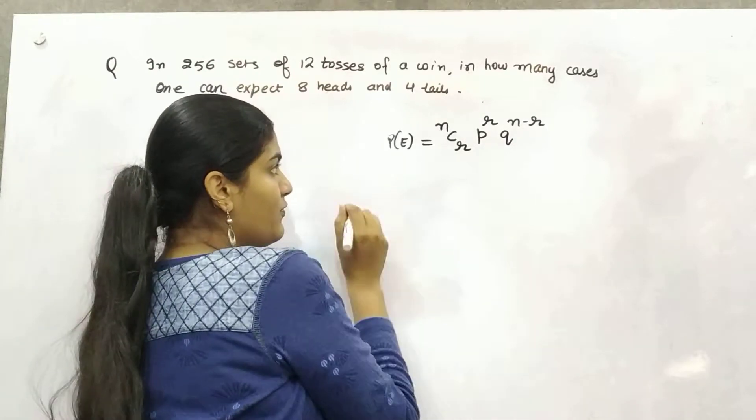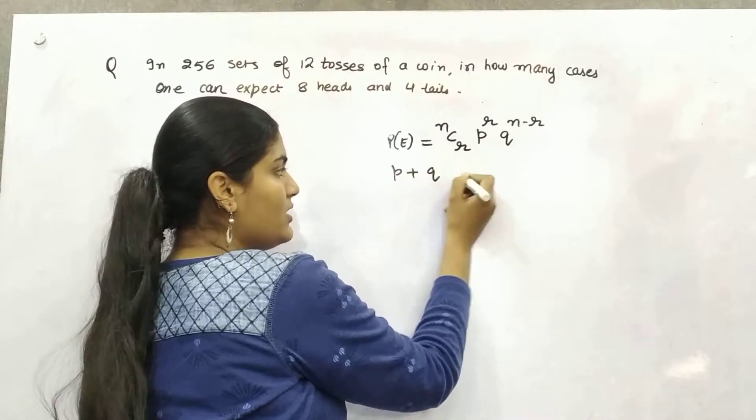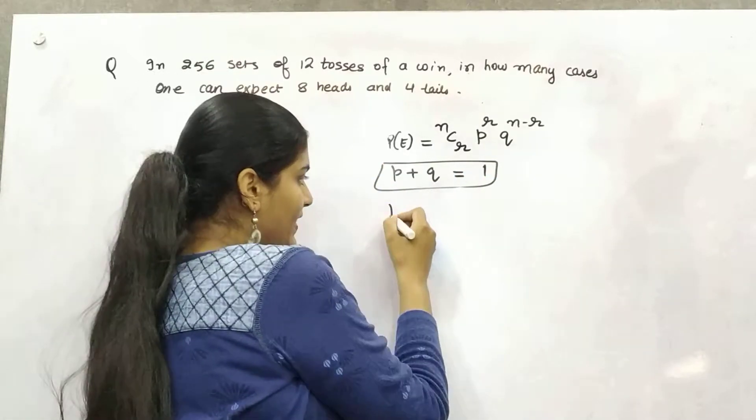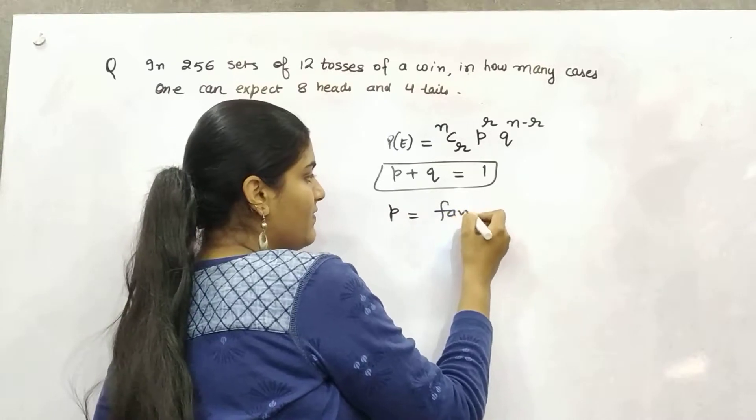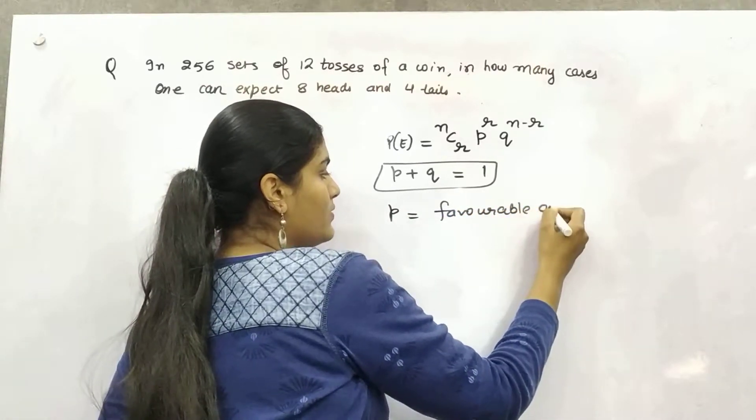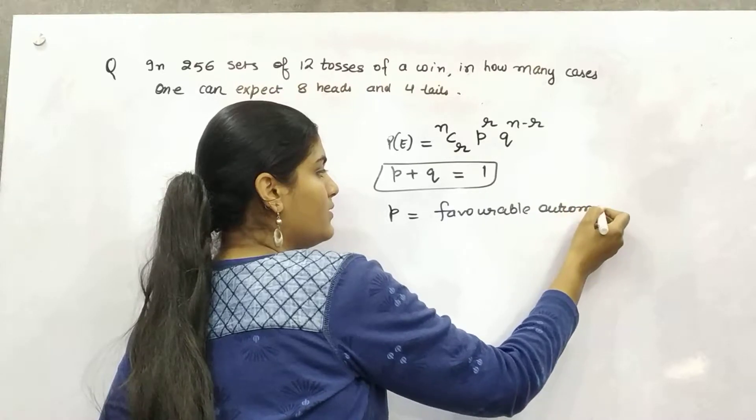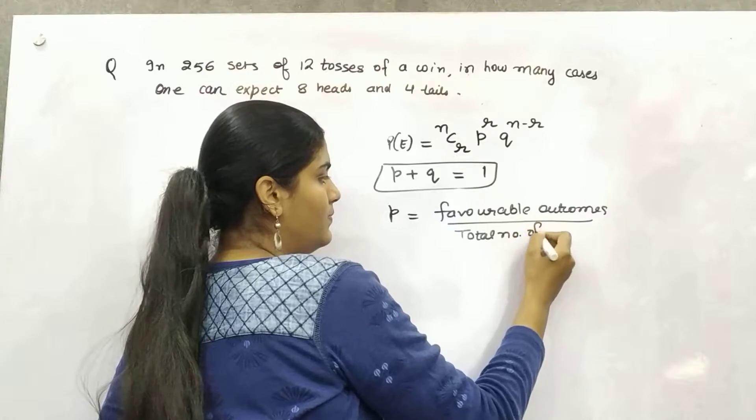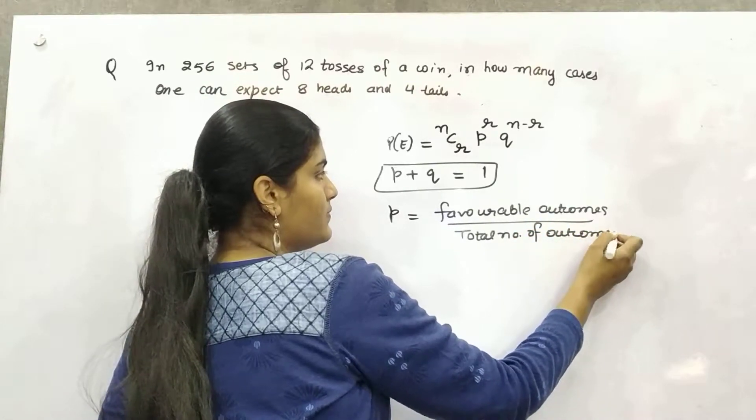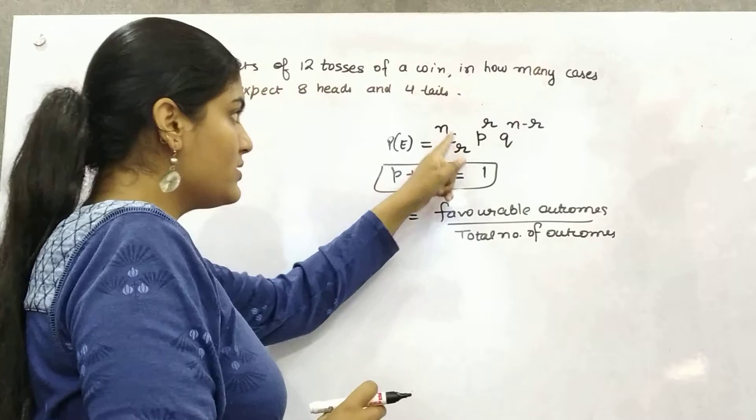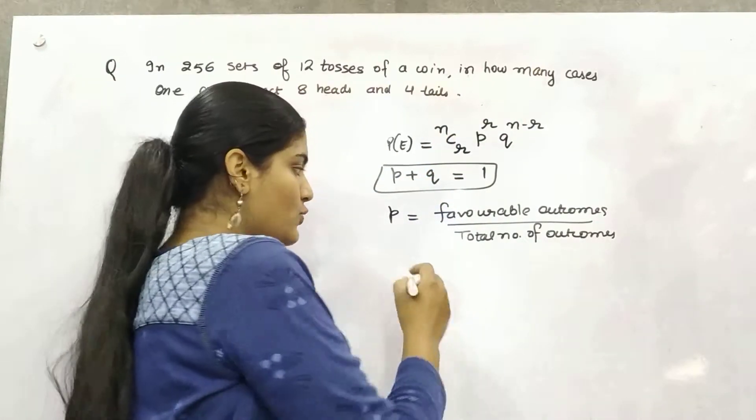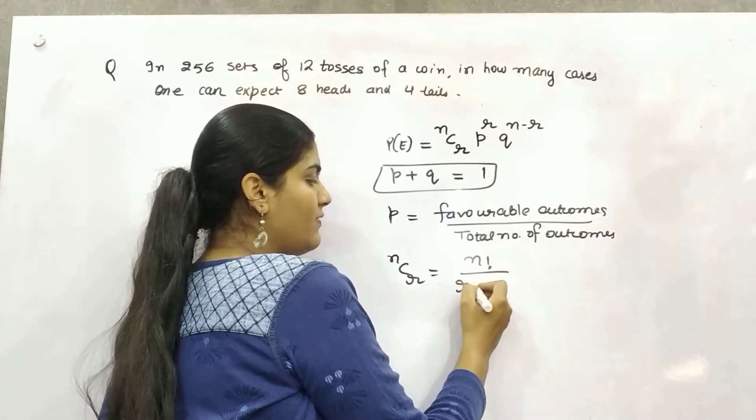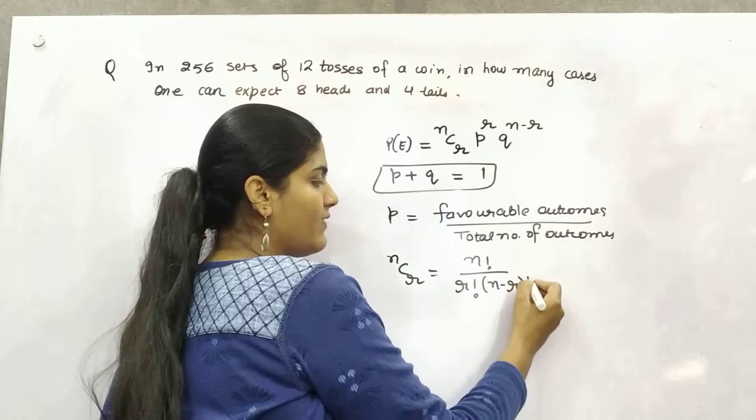So if you have P and Q, they are always one. You can find out P by dividing favorable outcomes with total number of outcomes. And how you can solve NCR? This is combination part. So the formula is N factorial by R factorial into N minus R factorial.